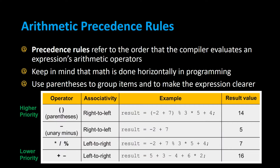Arithmetic precedence rules refer to the order that the compiler evaluates an expression's arithmetic operators. Keep in mind that math is done horizontally in programming — it's not done vertically like in a math class. So you want to use parentheses to group items together and make the expression clearer. Parentheses take the higher priority, so whatever is in parentheses gets evaluated first, and that's done from right to left.